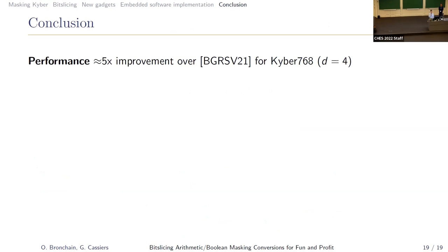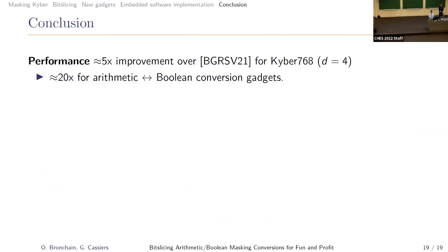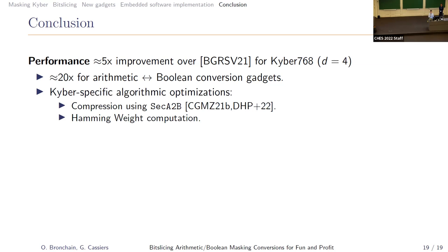In conclusion, the community has made a big improvement in masking Kyber over the last year. Compared to work from last year for four shares, we achieve a factor of five speedup in total on Kyber. This comes from improved arithmetic-to-Boolean and Boolean-to-arithmetic conversions, as well as optimizations for polynomial comparison, compression, and Hamming weight computation for CBD. The resulting point is that in a masked implementation, Keccak is again the bottleneck, meaning that to further improve performance of lattice-based crypto in the masked world, we need fast Keccak.